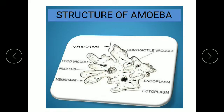A large disc-shaped nucleus is present in the cell. The contractile vacuole present in amoeba carries out osmoregulation. Osmoregulation is the process by which water-salt concentration in an organism is maintained. Food is taken into the cytoplasm, forming a food vacuole.